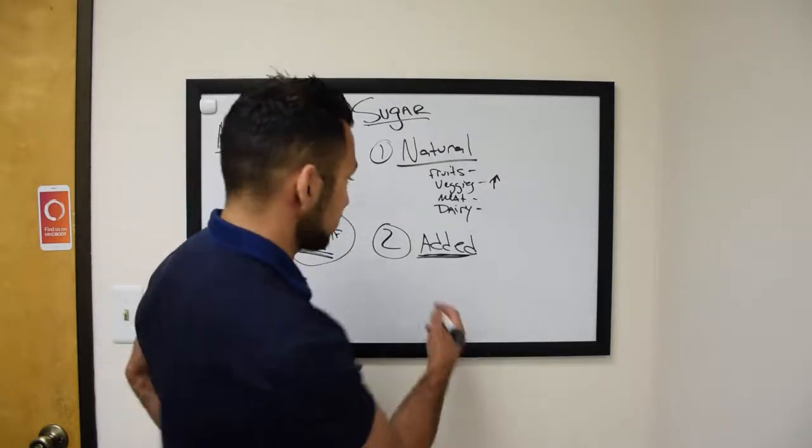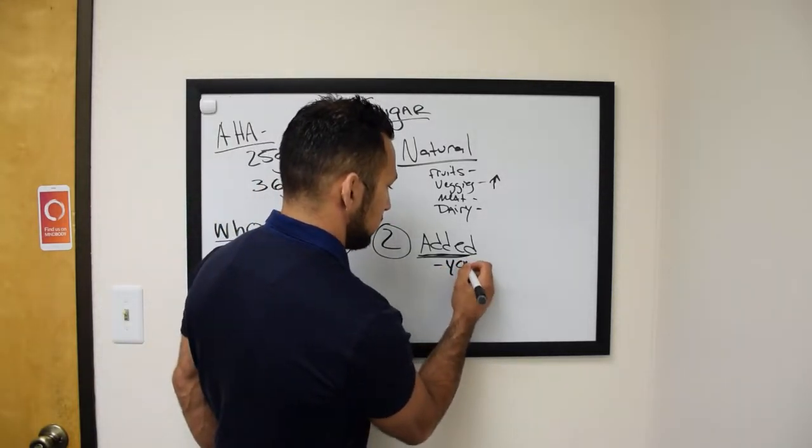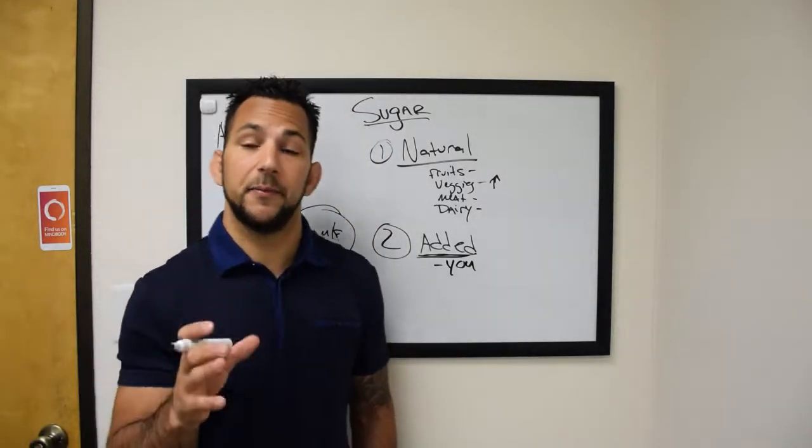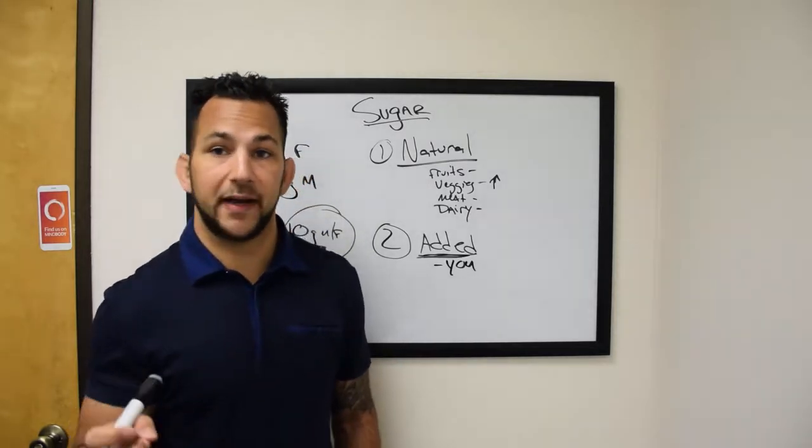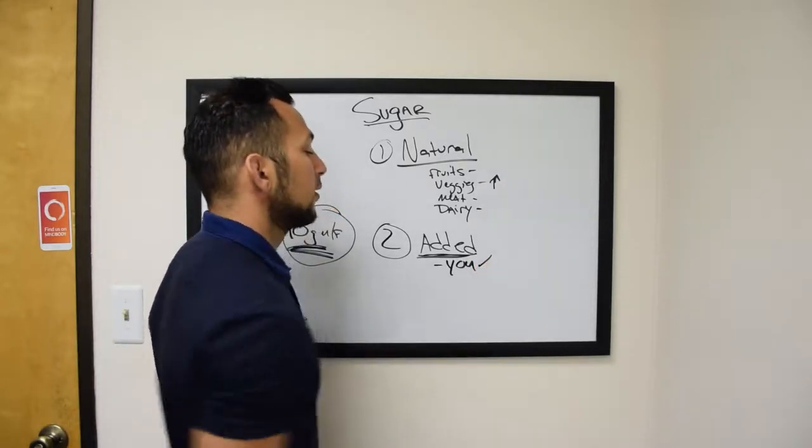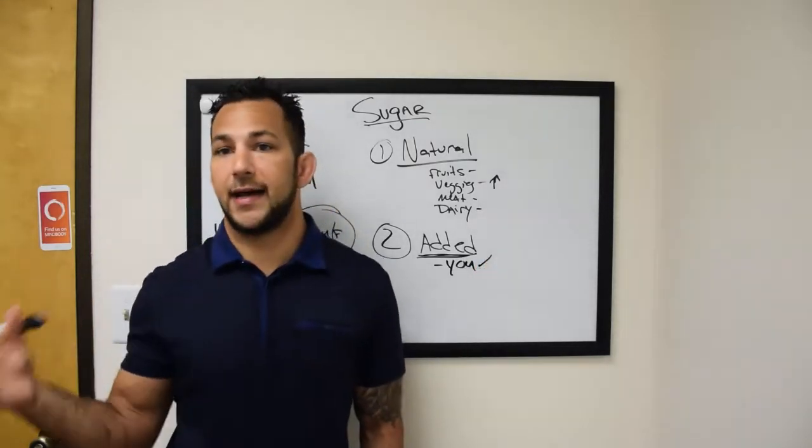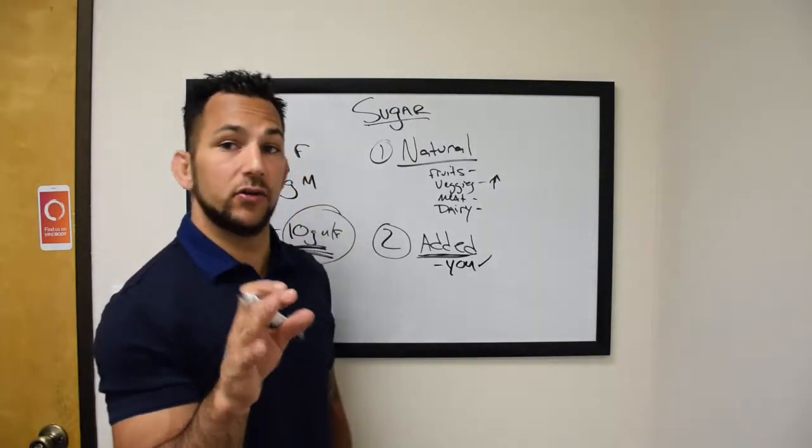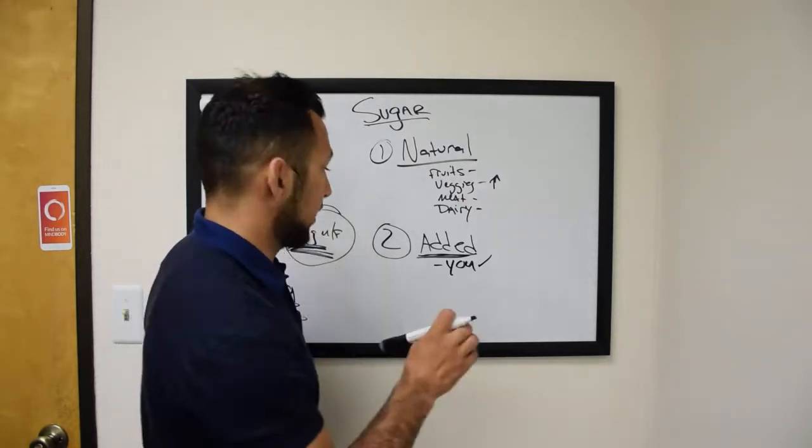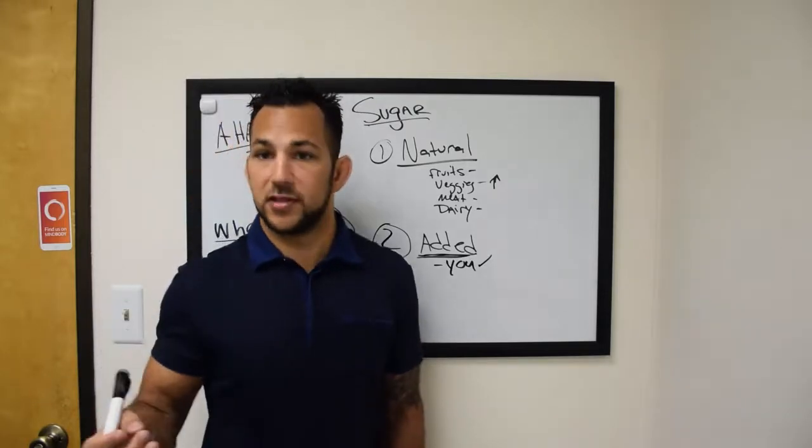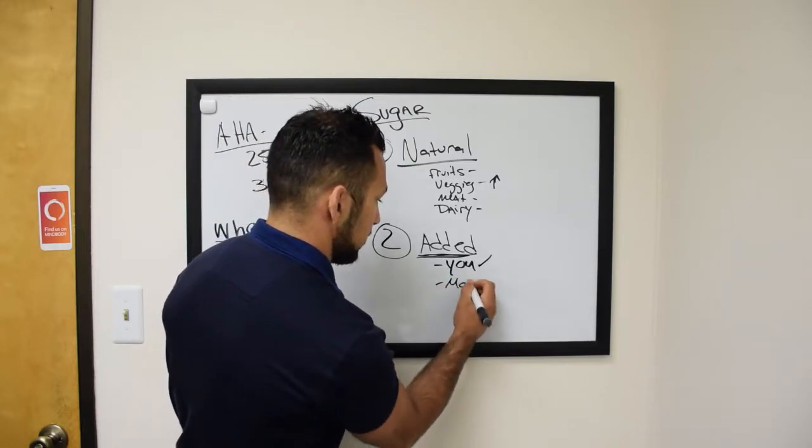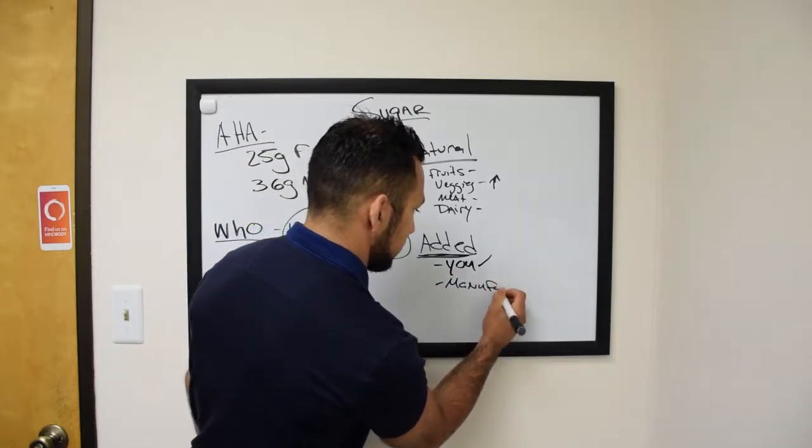Where do we get added sugars from? There's really two sources. One, you. As I said before, it's the coffee, when people add two sugar packets, or one sugar packet, or a tablespoon, whatever it is, a teaspoon, you have you that added the sugar to that diet. So it's you. You really need to watch out what you do and your habits of how you add sugar. Try to not add actual sugar to your cereal. That would be a good one.